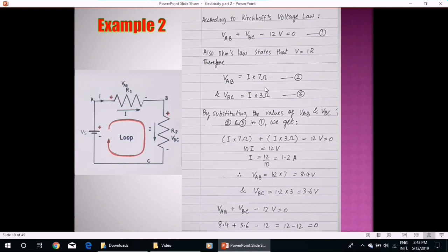So, we substitute this value of current in equation 2 and 3 and we will get the values of potential drop across AB and BC which is 8.4 volt for VAB and VBC is 3.6 volts. Now, we put all these values of VAB and VBC in first equation and we get that it is 0.